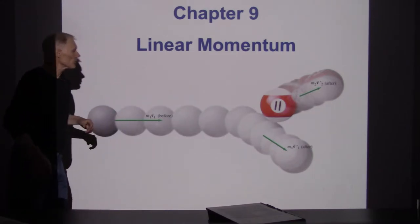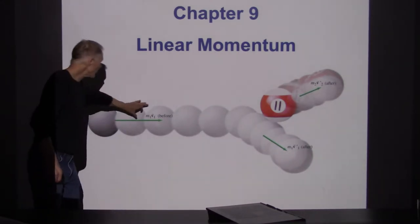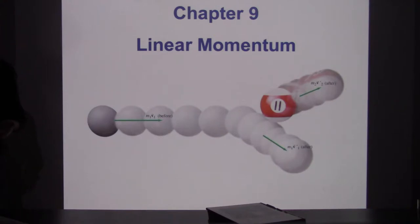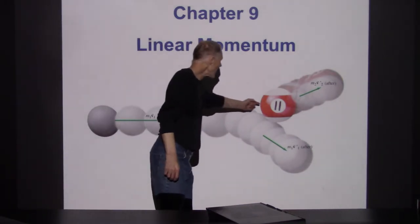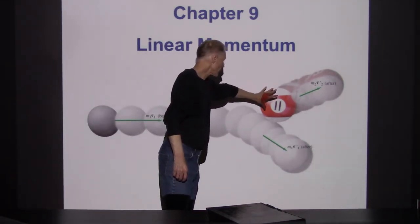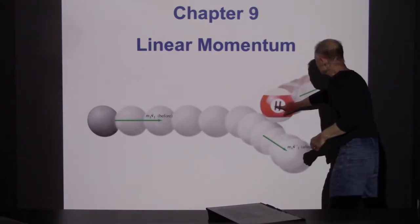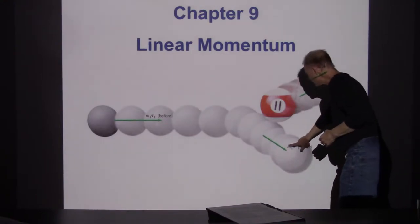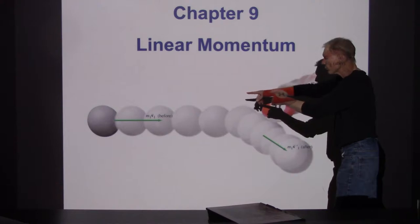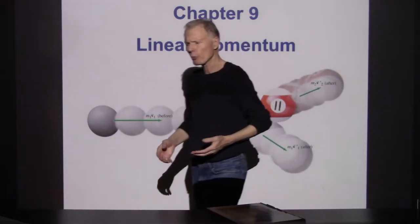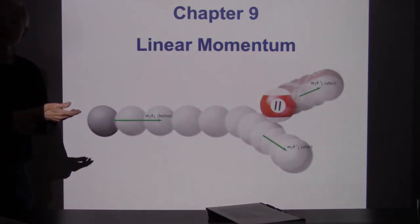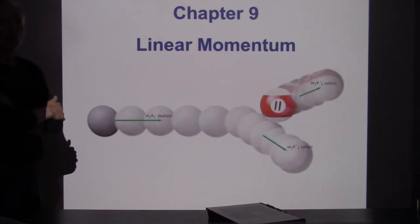Here's a couple of billiard balls running into each other, and the momentum before is listed as m times v. So if I take the mass of the object and the velocity and multiply those together, I get the momentum. It collides into another object, which is pushed off in some direction. This has mass m2 and velocity v2, this is m1 v1 from before. What we find out with linear momentum is that it's a conserved quantity, kind of like energy was, and we can use this to solve problems.